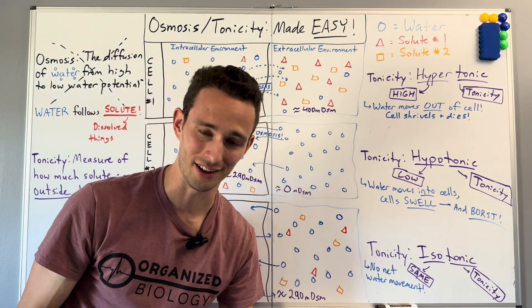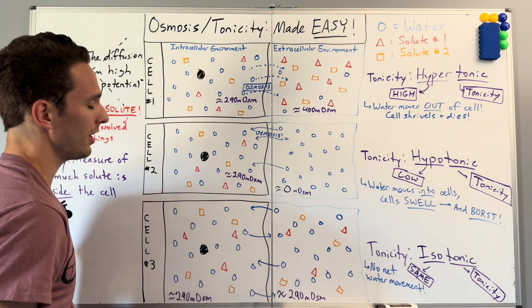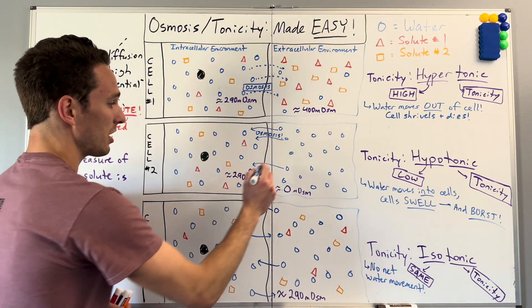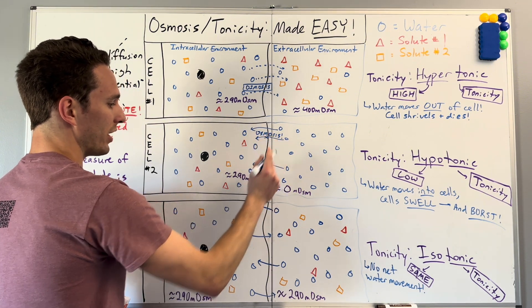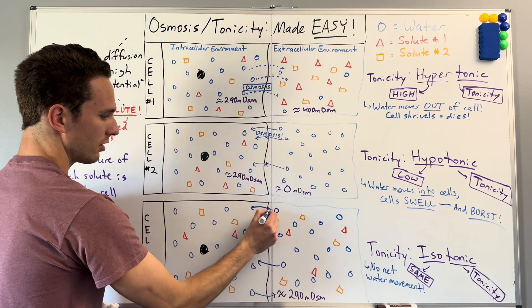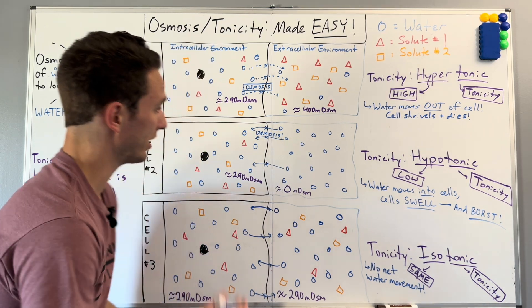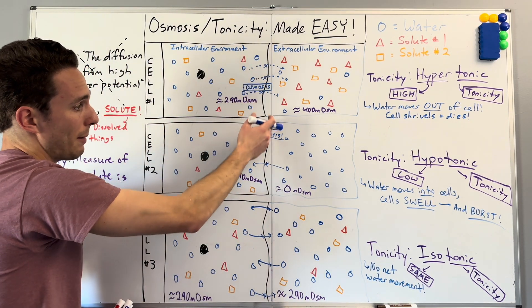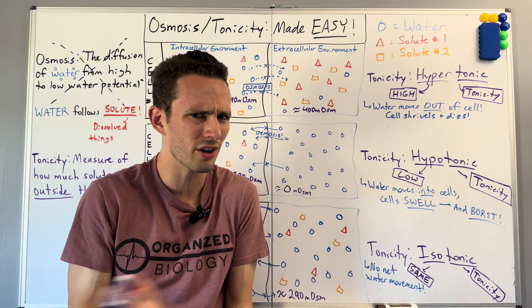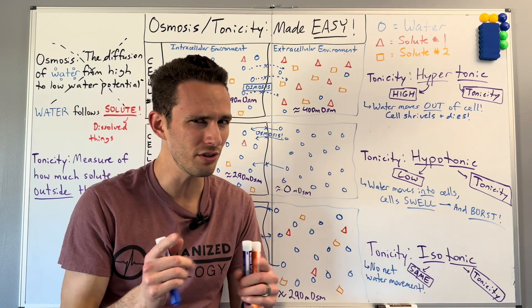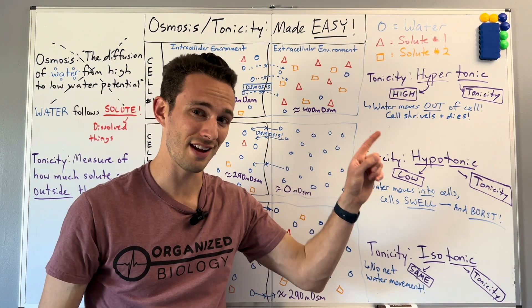But let me throw a wrench in this whole thing. Water in and of itself cannot pass through this cell membrane that is on the outside of these cells. That's because water is a polar molecule and it can't cross the fatty nonpolar membrane of the cell. So how does water move across the membrane in the first place? Well, you need to watch the cell transport video next.